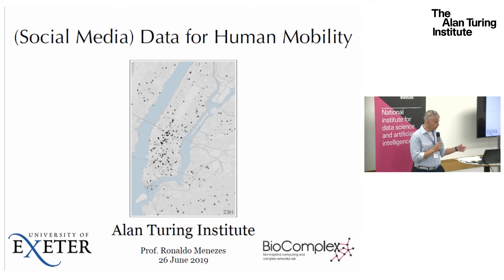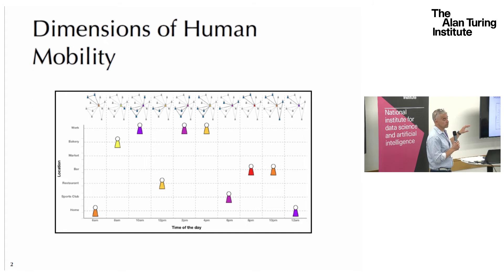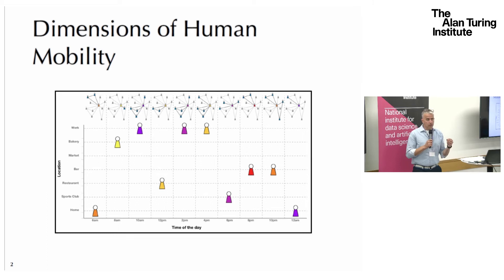People provided some classification on data, so I'm going to provide a different one. When we try to understand how people move, we generally try to find datasets that provide us three dimensions: the social dimension — who you are with; the spatial dimension — where you are; and what time of the day we observe you. Not all datasets have those three dimensions, so there's an effort on trying to combine them. I'll go through a few that have been used in the literature, some by us as well.